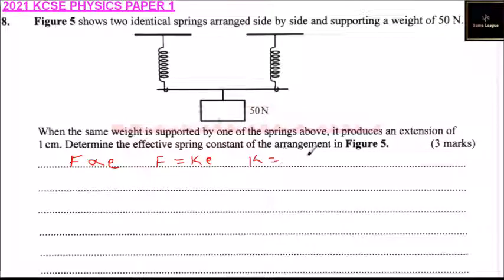So k equals F over extension, force over extension, which implies that k equals—the load is 50, that is the force due to gravity—divided by one centimeter, and this gives you 50 newtons per centimeter.